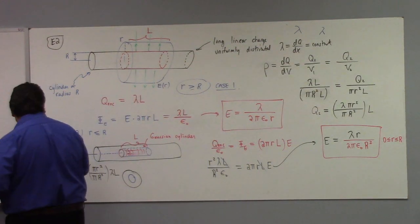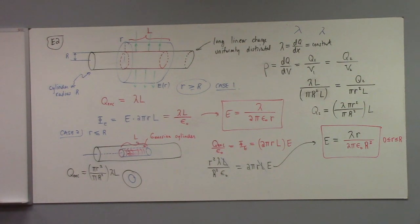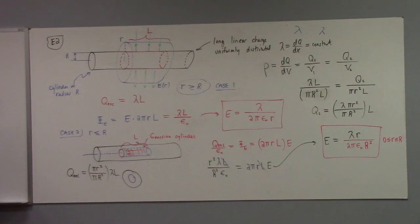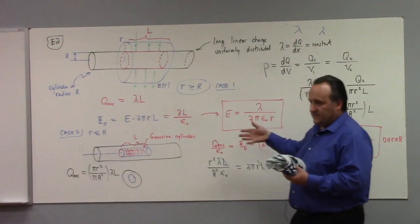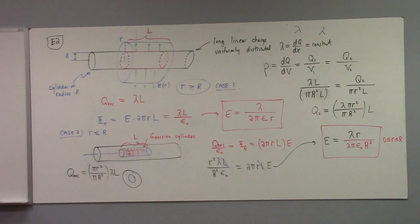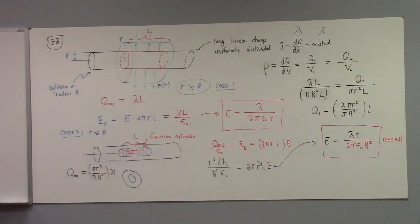There's a more interesting problem where the charge density is not uniform, but depends on a function of the radius from the center of the cylinder. Then we'd actually have to do an integration to calculate the charge enclosed. I'll work that in a future class — I'll show how we can use calculus to solve slightly more complicated problems that don't just have uniform charge. Uniform charge, we can get away with ratios. That is the most confusing thing — setting up the charge enclosed in this kind of situation.